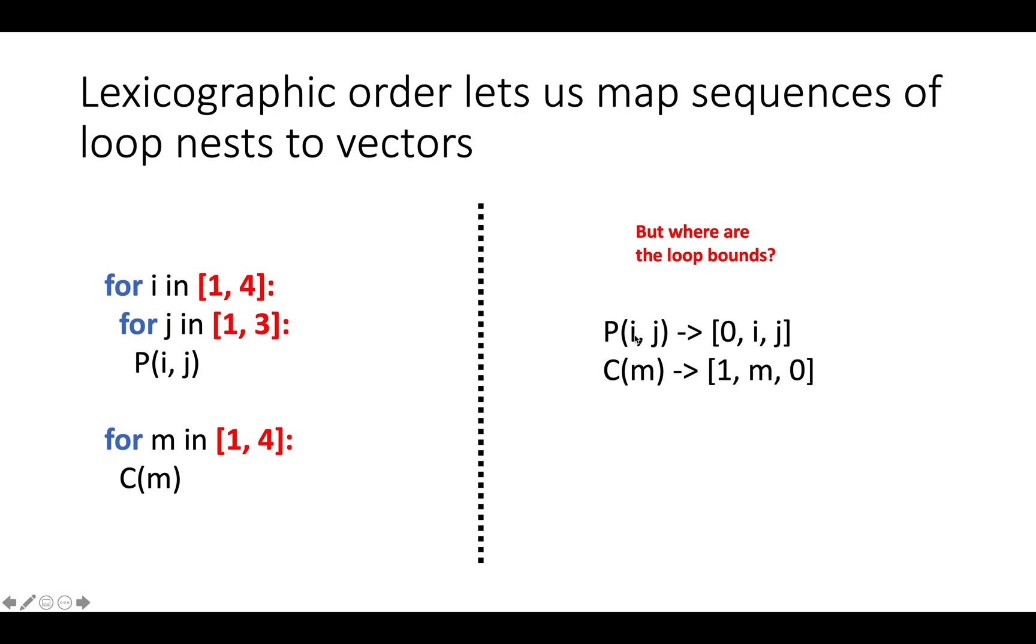For example, we know that P(1,1) happens at time [0, 1, 1], but according to this notation there's nothing to stop us from saying that P(7,7) happens at time [0, 7, 7], even though actually the statement instance P(7,7) never happens because the last instance of P is i equals 4, j equals 3.